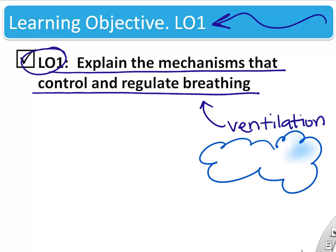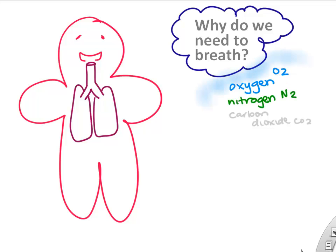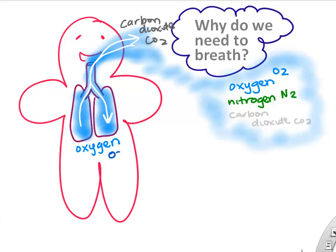How much air is ventilating into or out of your lung? You might think about why do we even need to breathe in the first place. Our atmosphere is full of gases like oxygen and nitrogen, even some carbon dioxide. We need the lungs to ventilate in order to get oxygen in close contact with our body's cells and also to get rid of carbon dioxide or CO2.